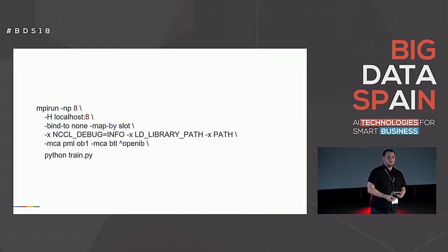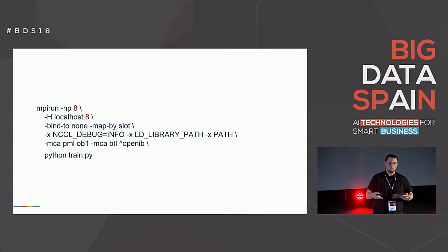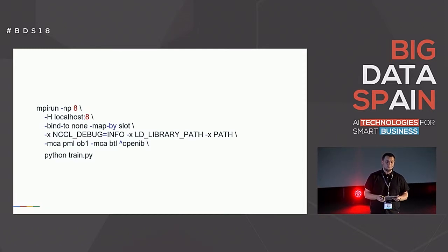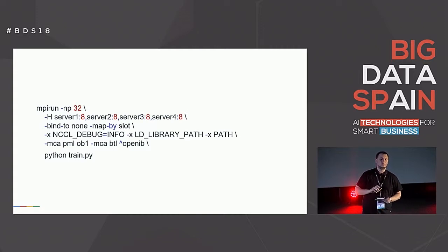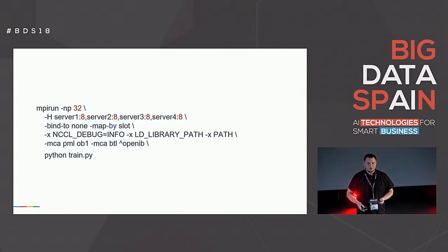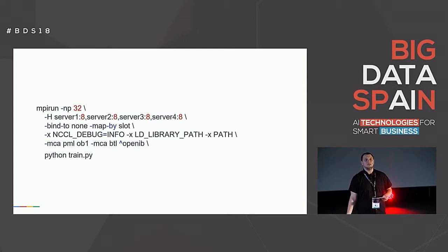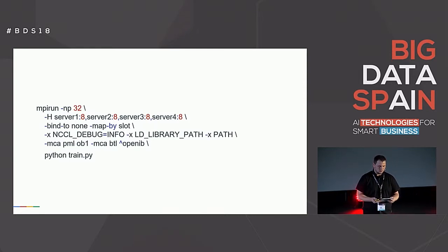To start training with eight GPUs on a local machine, you use `mpirun` with eight processes. The beauty of this model is that for multi-node training you just extend the same command — for example, training on four different nodes each with eight GPUs, totaling 32 GPUs, with no source code changes, just the MPI launch script.